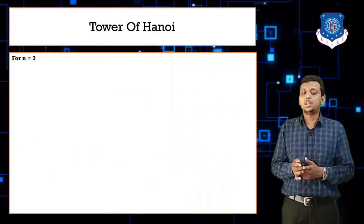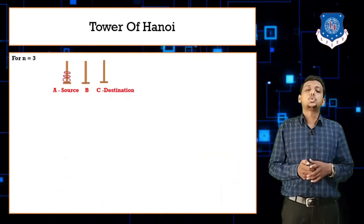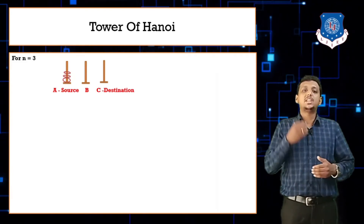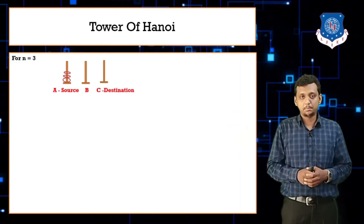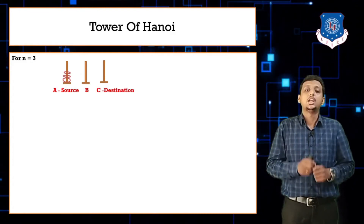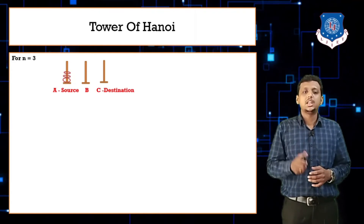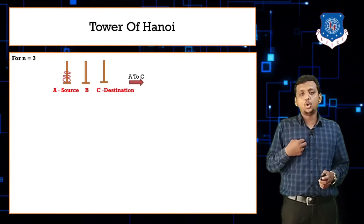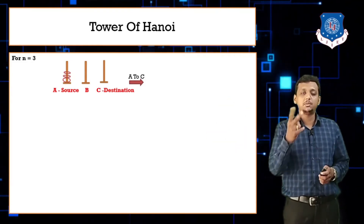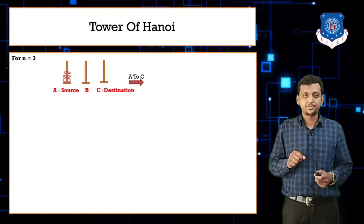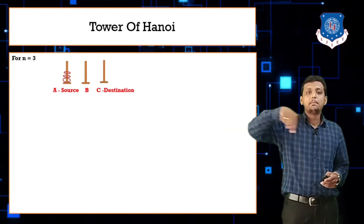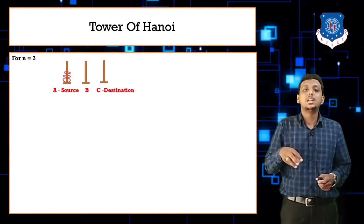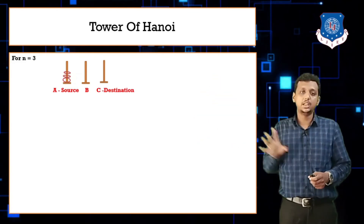For n equals three — this is the example you typically write in exams. The goal is to send all three discs from A to C. Step one of the algorithm is to send n minus one rings from A to B using C. So we first move the smallest ring from A to B, then the middle ring from A to C. But wait — we cannot put a larger disk on a smaller one, so we must stop and reconsider.